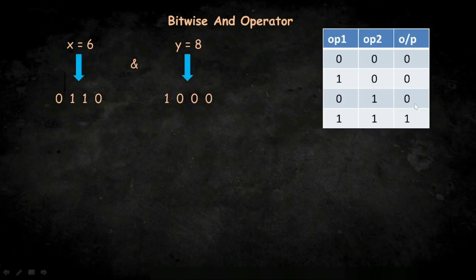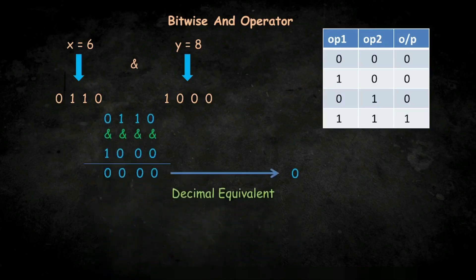Let's start with the bitwise AND operator. Here we have a table for the AND operator. Note that we will get one as output if and only if all the operands are one, otherwise we will get zero. For example, we want to perform bitwise AND on six and eight. The operation will be performed on each bit — here we have zero and zero, so the answer will be zero. Finally we will get 0000 as the output, whose decimal equivalent is zero.